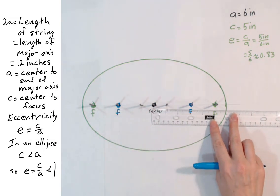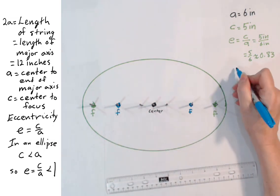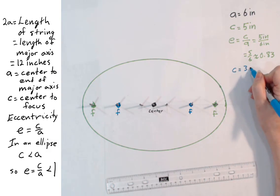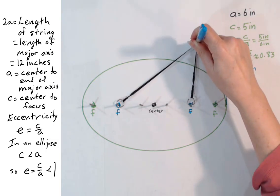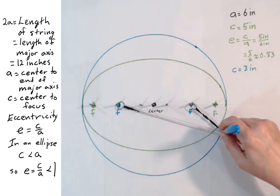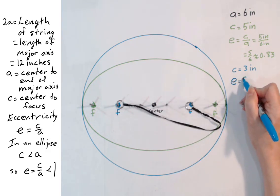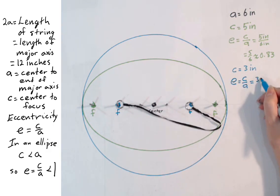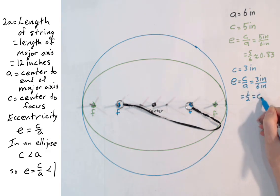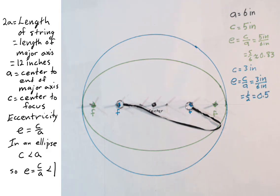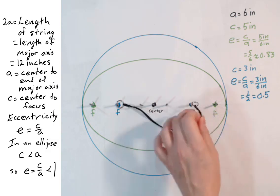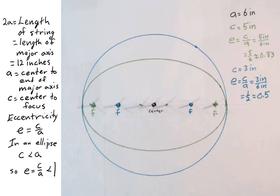For a different shape, we move the foci. Using these foci, the distance c from the center to one focus is 3 inches, giving us a different ellipse. Eccentricity is c divided by a, so for this ellipse, eccentricity will be 3 inches over 6 inches, which is 1 half, or 0.5. Notice that the second ellipse with the lower value of e is closer to circular. The higher value of e goes with the ellipse that is narrower.